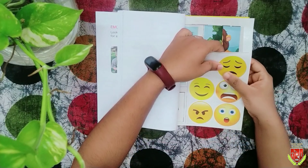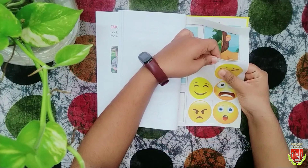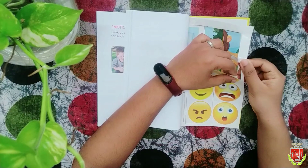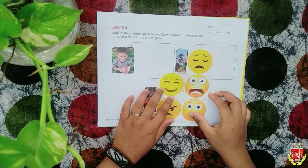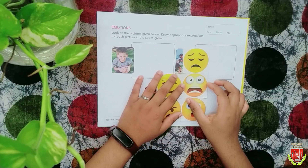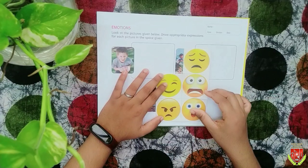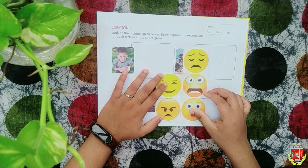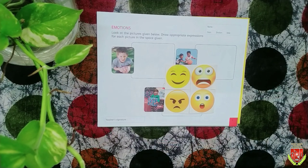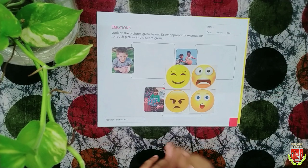We already seen the video, right? Then tell me, what are these emotions? What's this? Sad, anger, happy, surprise. Okay, well — you see this boy got injured at his knee. He feels pain.